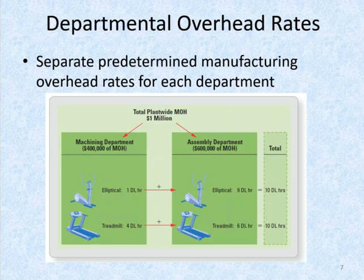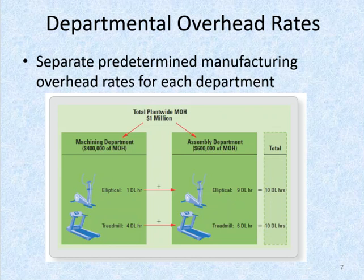Under departmental overhead rates, we allocate manufacturing overhead to jobs or products based on the extent to which each product uses different manufacturing departments. We calculate separate rates for each department, estimating the total manufacturing costs incurred in each department — known as departmental overhead cost pools. The company selects an allocation base for each department, calculates the departmental overhead rate, and then allocates manufacturing overhead from each department to individual jobs. This is a type of refined cost system, resulting in less cost distortion.